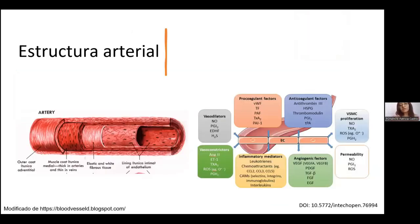Para entrar en contexto, aquí les muestro la estructura de una arteria. Esta está compuesta por la túnica más externa, que es la túnica adventicia, la túnica media o las células del músculo liso vascular, hay un tejido fibroso que es elástico, y la túnica íntima, que está compuesta por lo que llamamos el endotelio, que es una monocapa de células. Para que este vaso lleve a cabo todo su tono vascular normal, en la capa de células de músculo liso encontramos receptores del tipo adrenérgico, serotoninérgico, angiotensina y tromboxano, que regulan la contracción de estas células de músculo liso vascular.